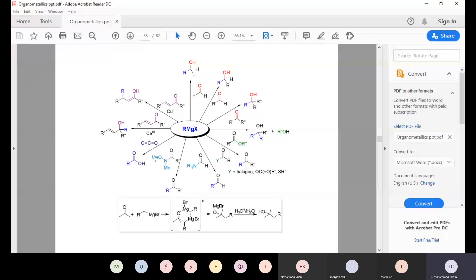When Grignard reagent reacts with carbon dioxide, this produces carboxylic acids. That means it also reacts with air. In the air there is carbon dioxide. I told you that the medium of the reaction must be inert - no carbon dioxide, no moisture. Moisture reacts, carbon dioxide reacts. When carbon dioxide reacts, it produces carboxylic acids. And when it reacts with moisture like H2O, this produces alcohol.